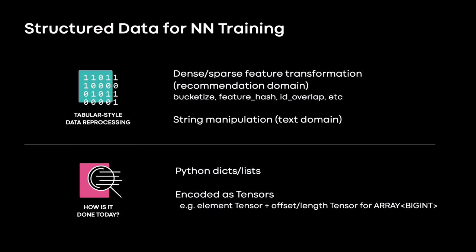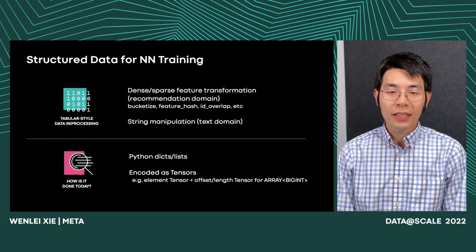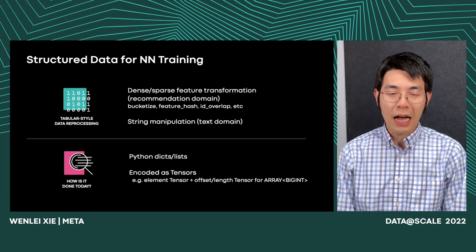To take an example, in the recommendation domain we often have dense or sparse feature transformations, such as bucketize — trying to discretize continuous values into buckets — and taking the hash of features and computing ID overlaps. Similarly, in the text domain, there are many string manipulations required before you can feed tensors to the trainer, such as tokenizing sentences, doing trim-style operations, and looking up in the vocabulary to convert them into numerical values.